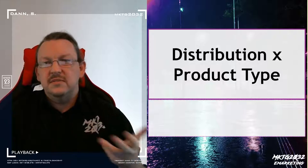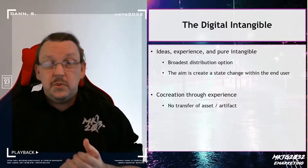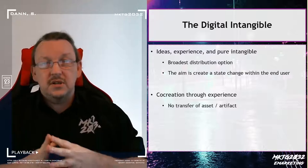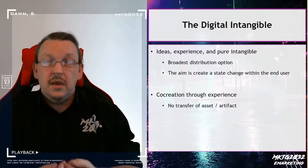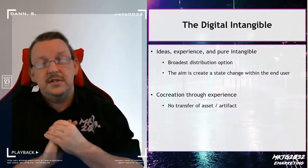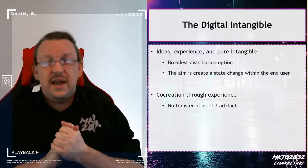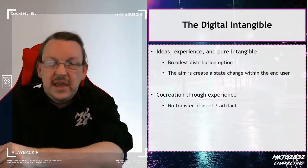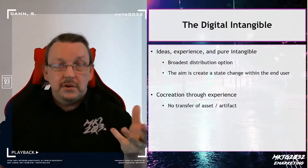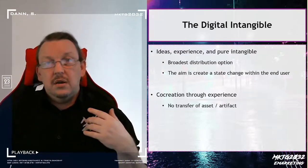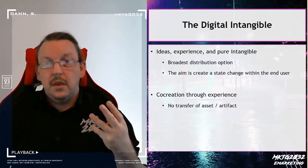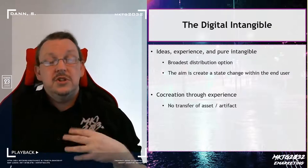Now we're going to talk about a sequence of product types and how those product types are distributed through the internet. It's going to get weird in parts because the internet is a big wild weird place. The first thing: the digital intangible. You are currently experiencing the digital intangible. If you are watching this on Echo 360, Stream, or YouTube, you are engaged with the ideas and the experience. This is the pure intangible.